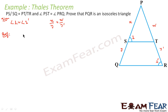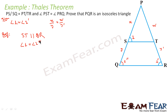Since X by Y is equal to X dash by Y dash, by the converse of Thales theorem I can say that ST is parallel to QR. This is true only for parallel lines in the triangle. Since ST is parallel to QR, angle PST should be equal to angle PQR — let this be angle 1 double dash. So angle 1 is equal to angle 1 double dash, by corresponding angles. Now we have two equations: angle 1 equals angle 1 dash, and angle 1 equals angle 1 double dash. So angle 1 equals angle 1 dash equals angle 1 double dash.